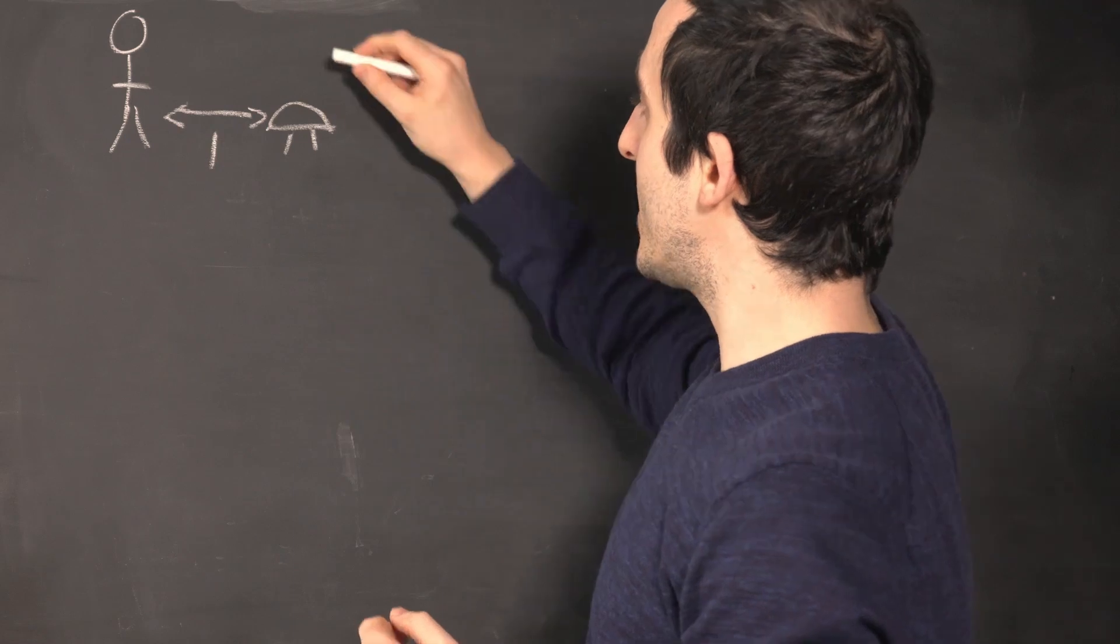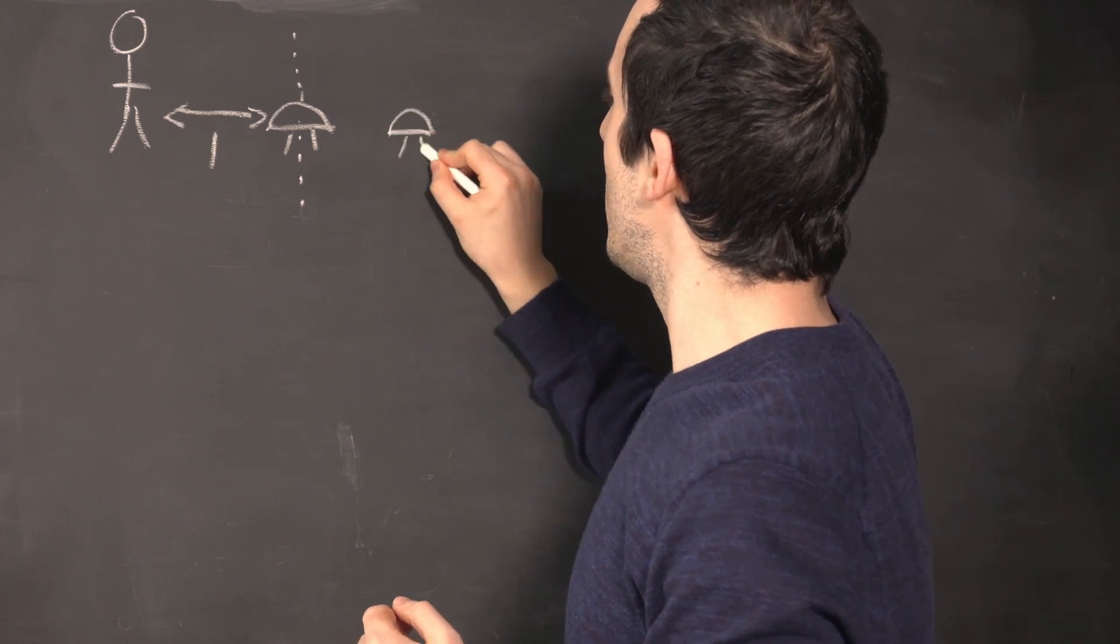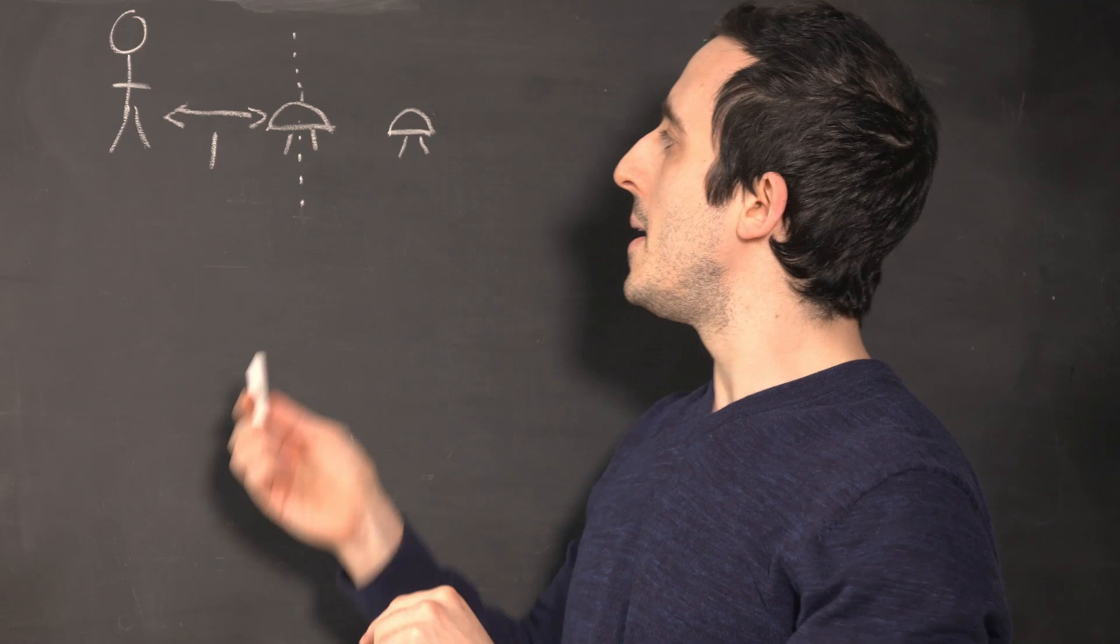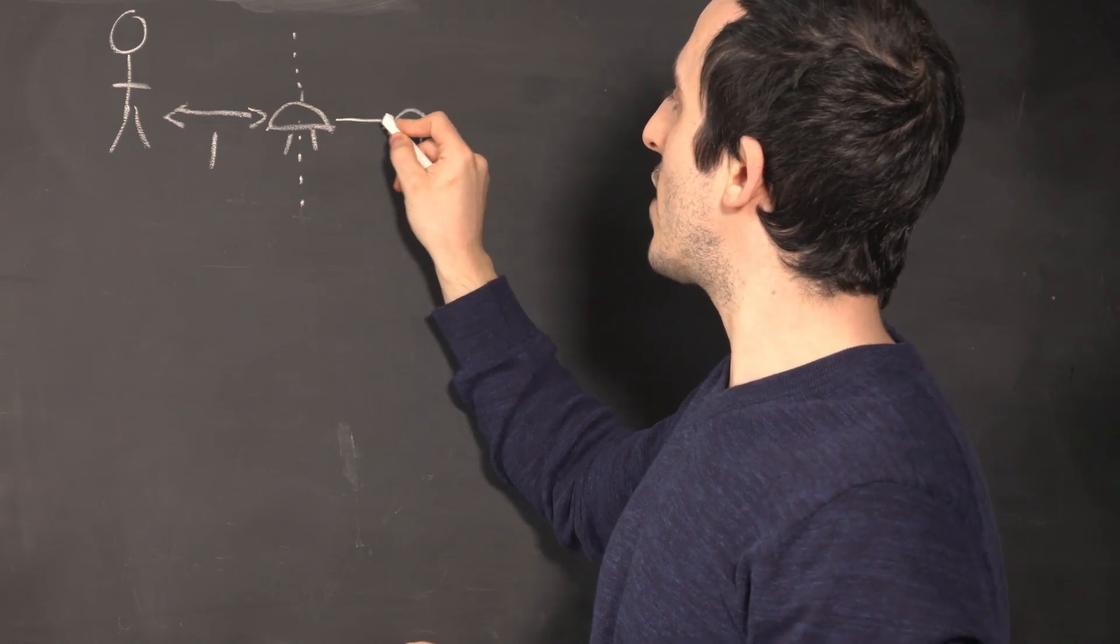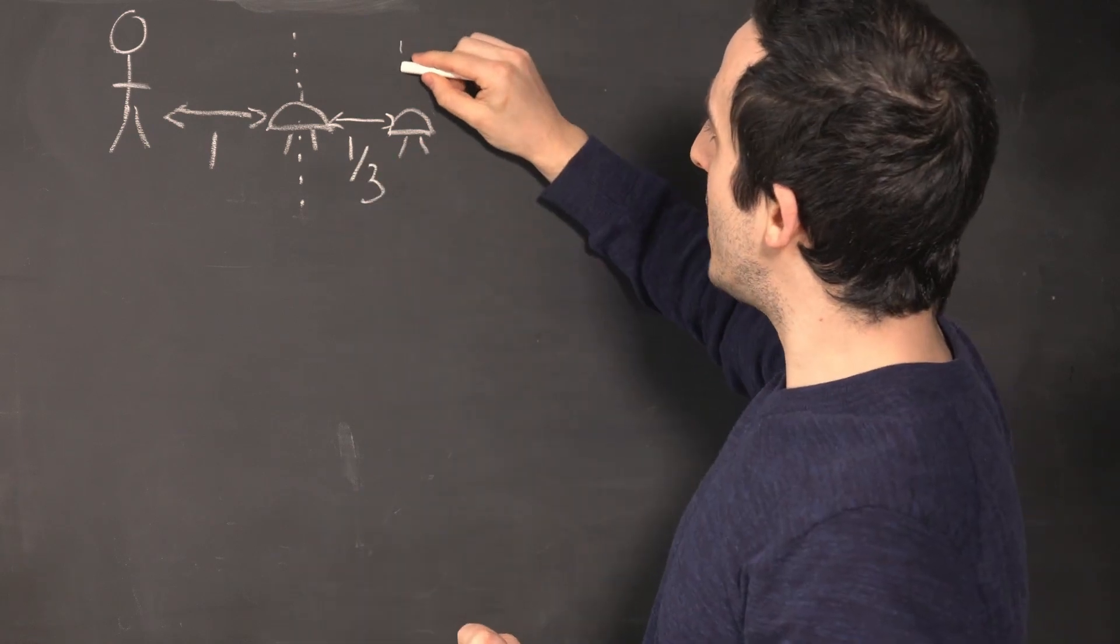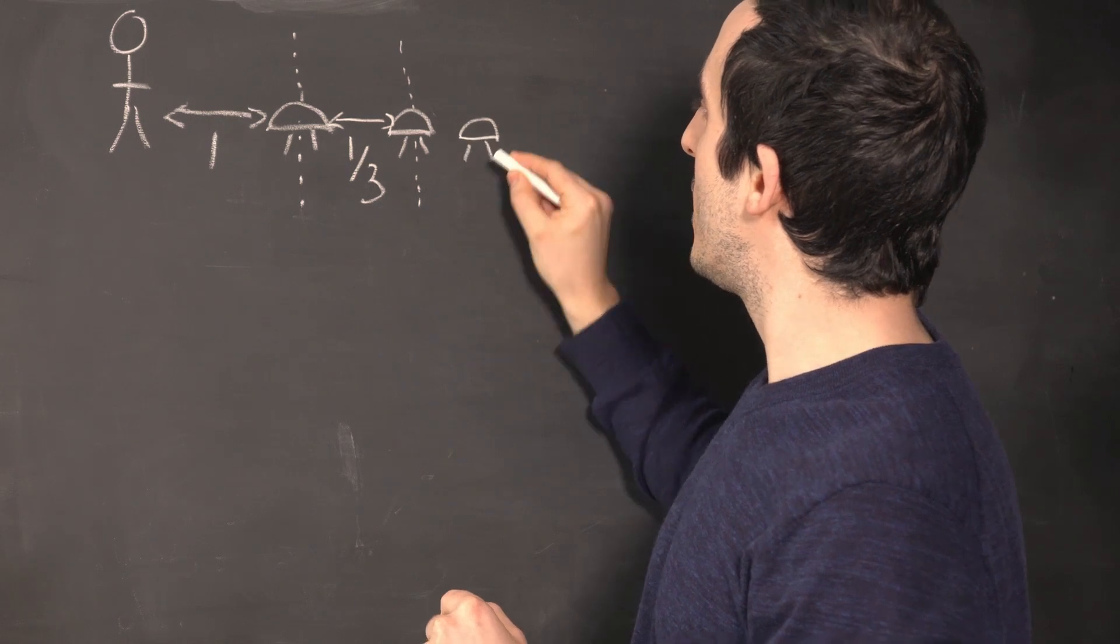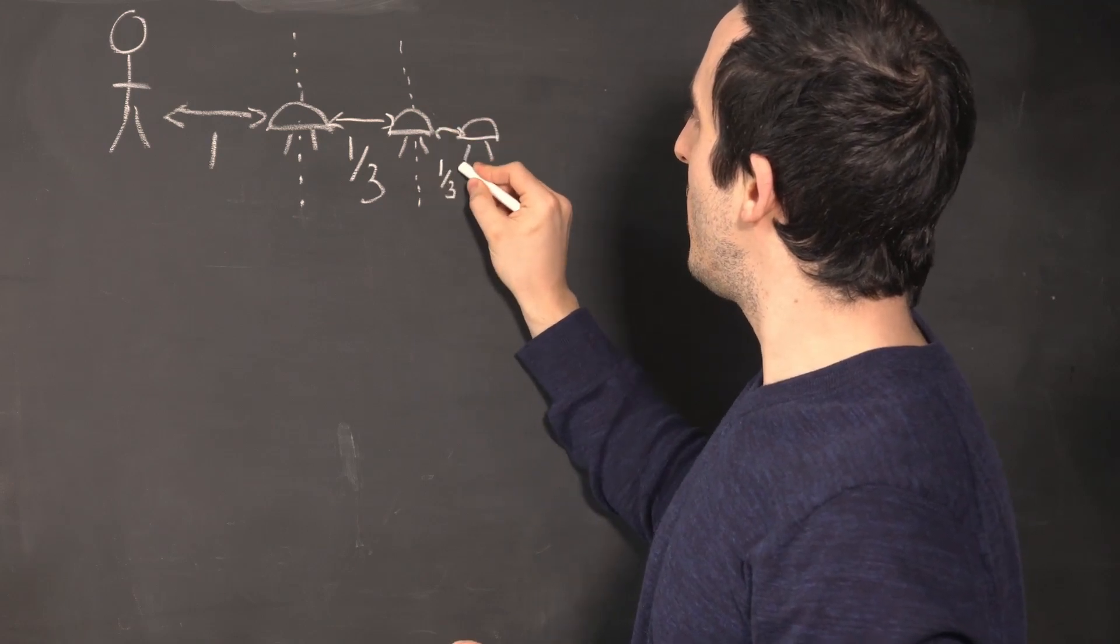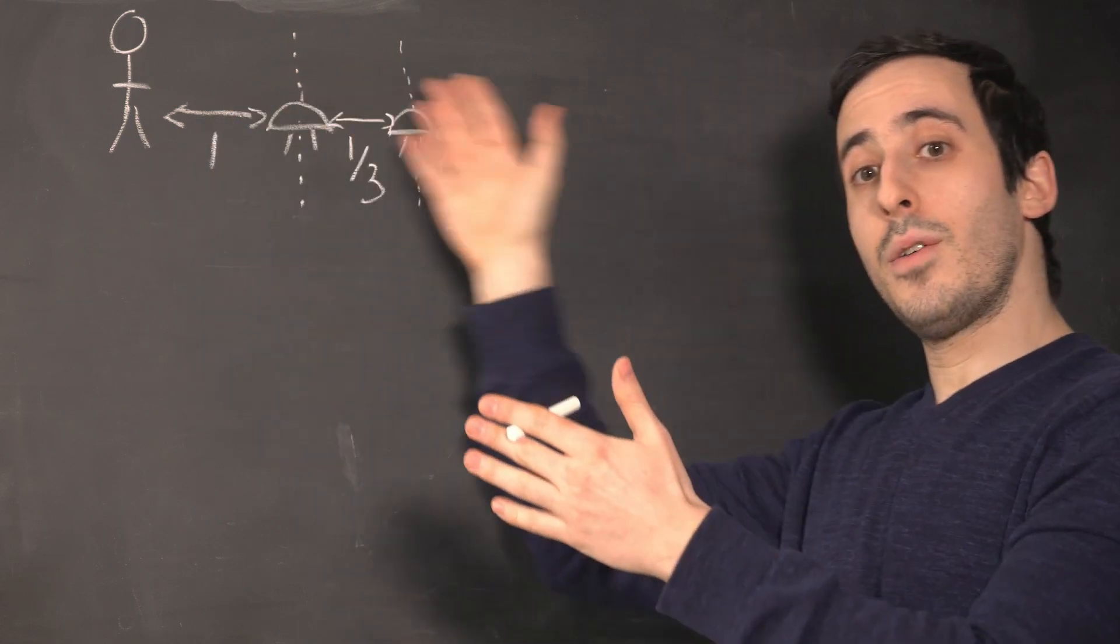And then, by the time Achilles has reached this point where the tortoise started, the tortoise will have moved forward again. And to keep the maths simple here, I'm going to say that Achilles travels three times faster than the tortoise. So by the time Achilles has travelled this one metre to where the tortoise started, the tortoise has moved forward again. And the tortoise is travelling at a third of the speed of Achilles, so the tortoise will have travelled one third of a metre in that time. And then by the time Achilles catches up to where the tortoise was at this point in time, the tortoise will again have moved forward. So Achilles would have travelled one third of a metre in that time, and the tortoise, travelling at a third of the speed, will have travelled one third of one third of a metre, which is equal to one ninth.